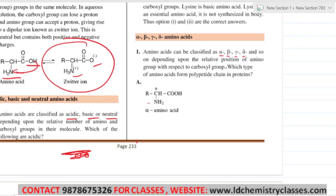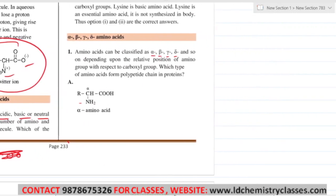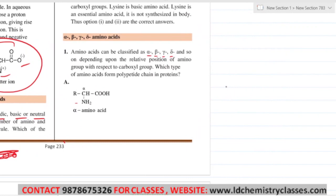Alpha amino acid is the answer, because proteins are alpha amino acid polymers. Alpha, beta, gamma, delta classification is based on the relative position of amino group.